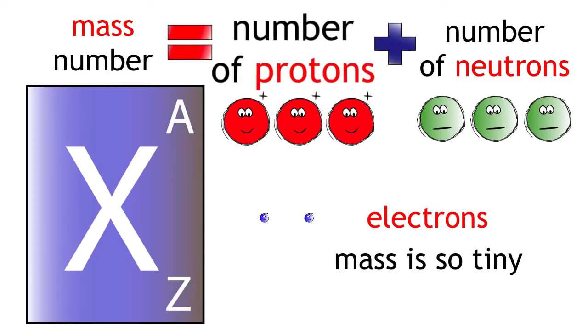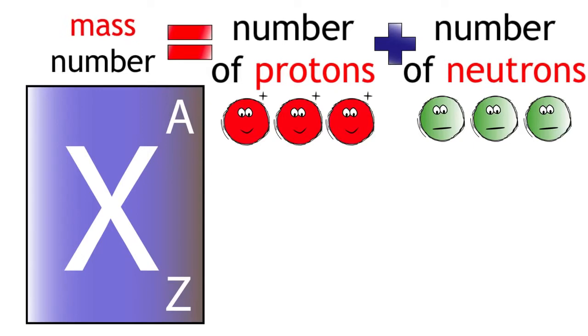If the number of protons always stays the same in a particular element and we are ignoring the mass of electrons, it must mean the number of neutrons is causing the difference in mass.